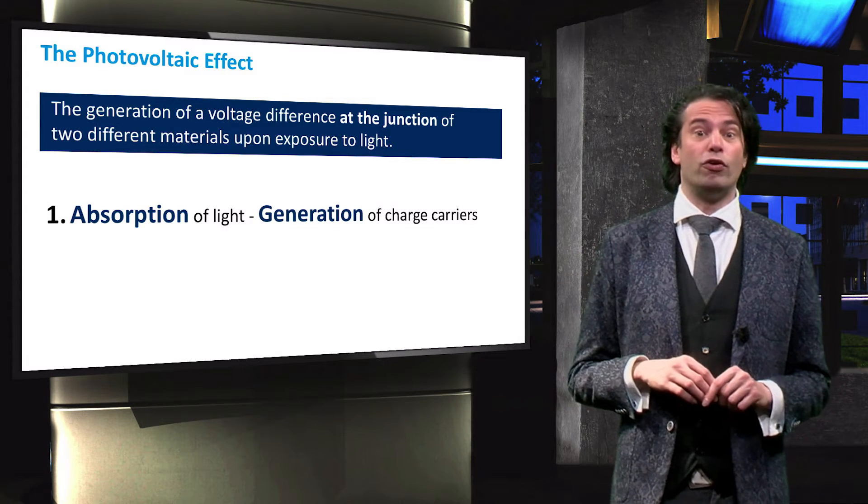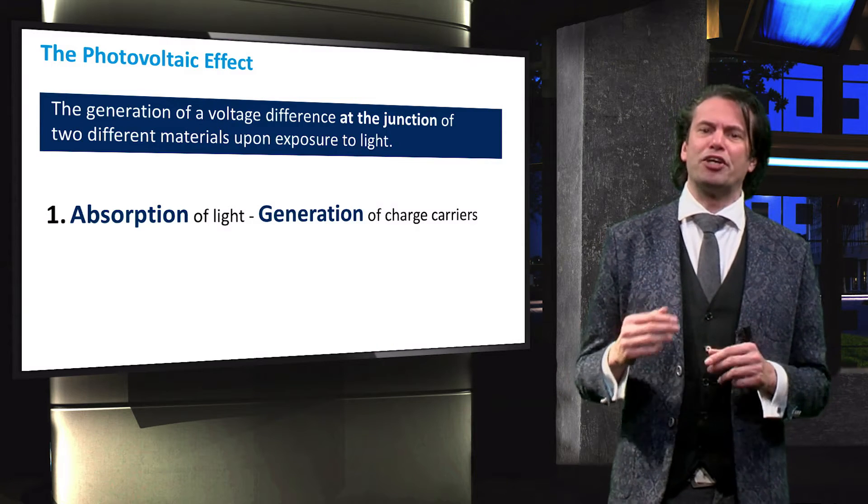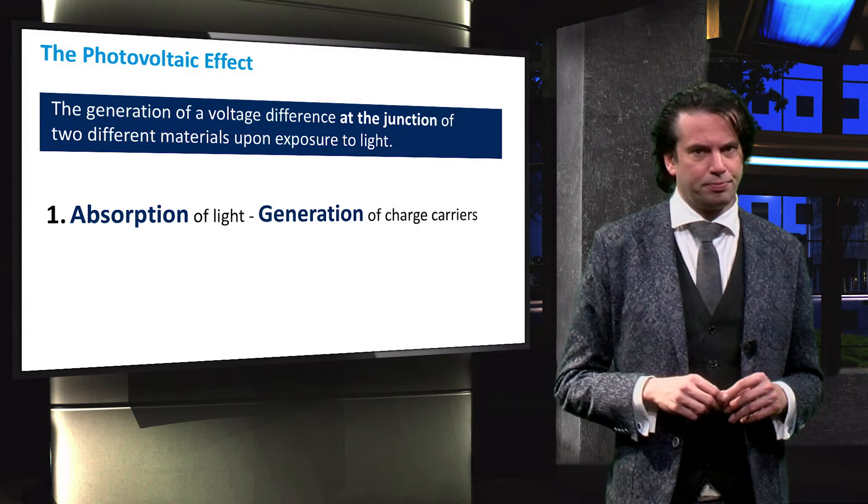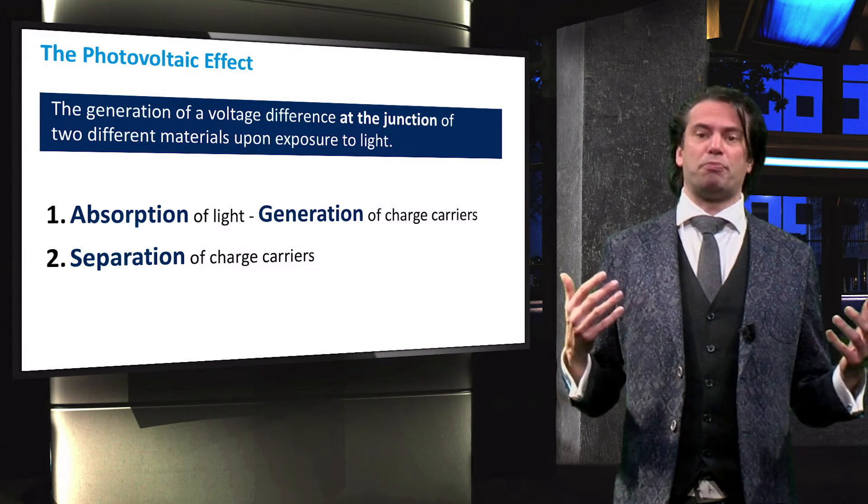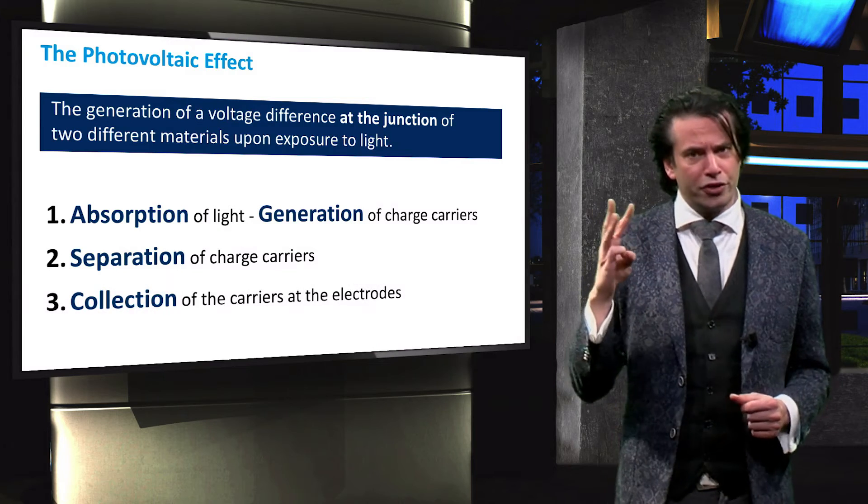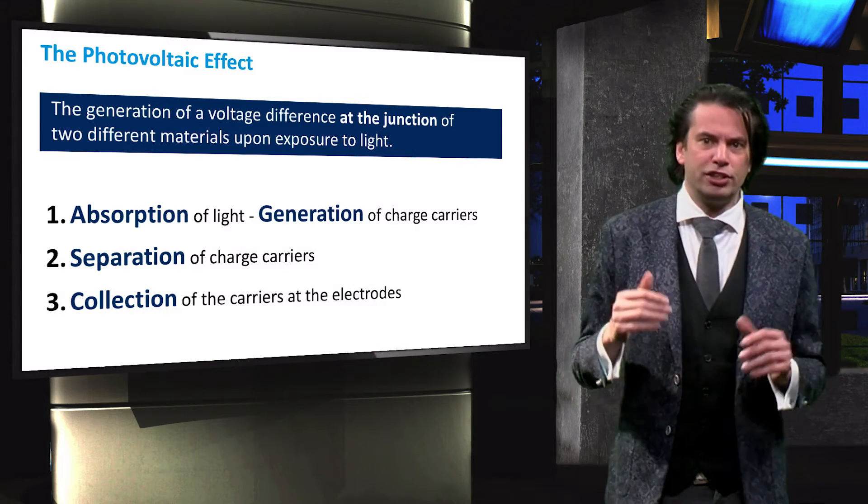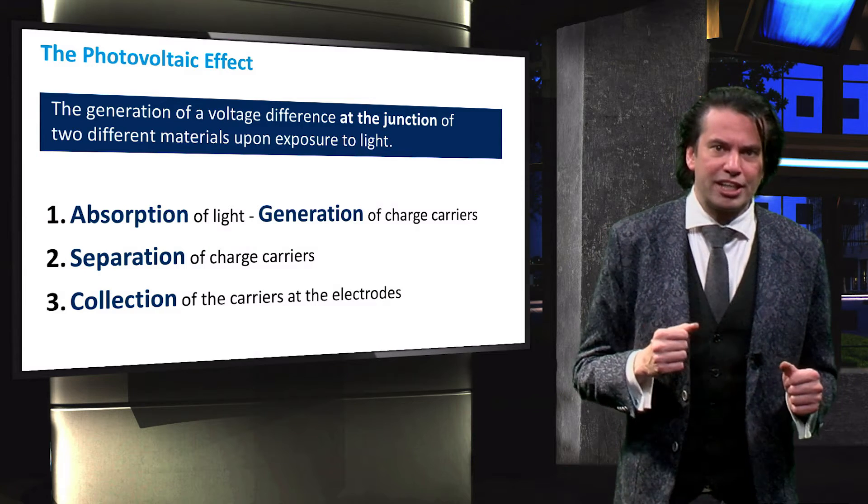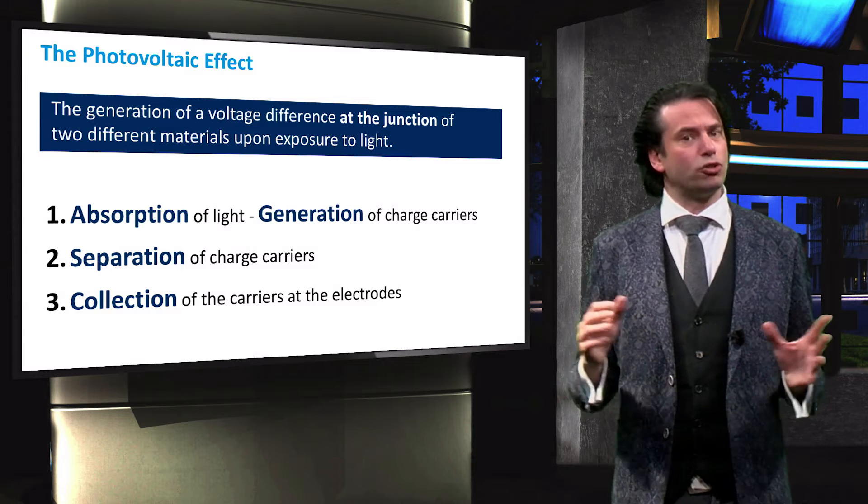The first process involves the absorption of light, which leads to the generation of charge carriers. During the second process the generated charge carriers are separated. The third and final process consists of the collection of the charge carriers at the electrodes. Let's look at these processes in some more detail.